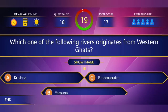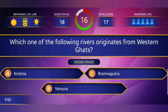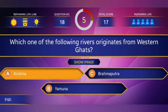18th question: Which one of the following rivers originates from the Western Ghats? Answer: Krishna river.